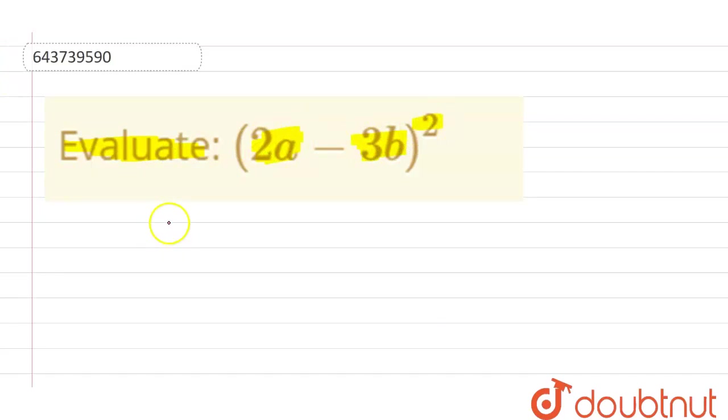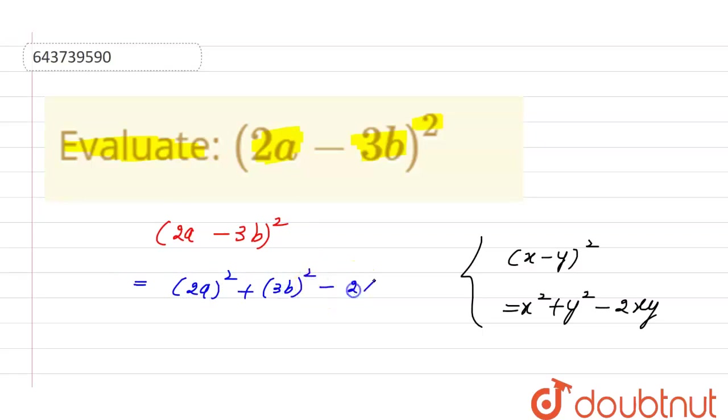Now we can start with the given information: (2a - 3b)². So we have the formula (x - y)² which equals x² + y² - 2xy. So the value of x is 2a here and the value of y is 3b here, which is equal to x² + y² - 2xy.